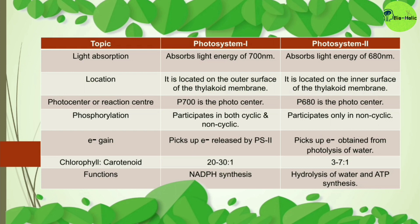Regarding electron gain: PS1 picks up the electrons released by PS2, while PS2 picks up electrons obtained from the photolysis of water. Regarding the chlorophyll-to-carotenoid ratio: in PS1 the ratio is about 20:1 to 30:1, meaning for every 20–30 chlorophyll molecules there is one carotenoid molecule; in PS2 the ratio is about 3:1 to 7:1, meaning 3–7 chlorophyll molecules per carotenoid molecule. The function of PS1 is to synthesize NADPH, while the function of PS2 is the hydrolysis of water and ATP synthesis.